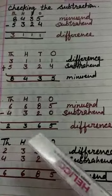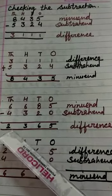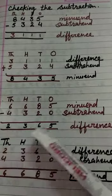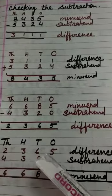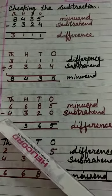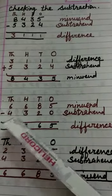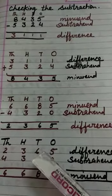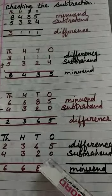Let's check the answer. First step, the difference number, 2,365. Second step, we will add the subtrahend number or smaller number, 4,320. Let's add these two numbers.